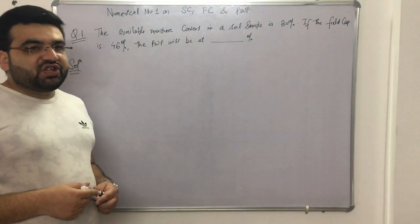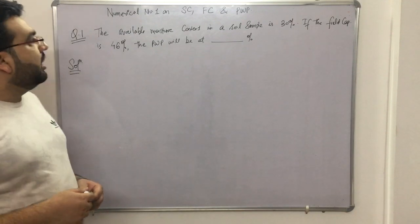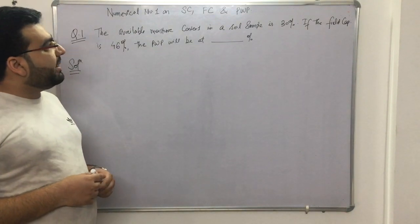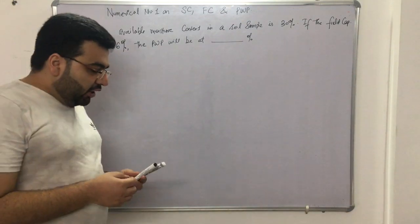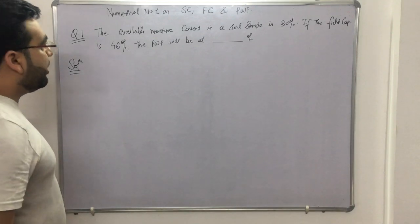Subject: Irrigation Engineering, Chapter: Soil Water Constraints. Topic: Numerical Number One on FC and PWP - field capacity and permanent wilting point. Now it's time to solve one numerical based on the concepts that we have already understood.